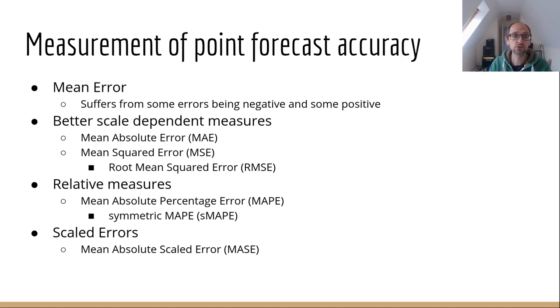You could, for example, take the absolute value of an error, which just means get rid of the negative sign if it is negative, sum all of those up and take the average. That's called the mean absolute error, and that's a really good measure to use when you're working with an individual time series.